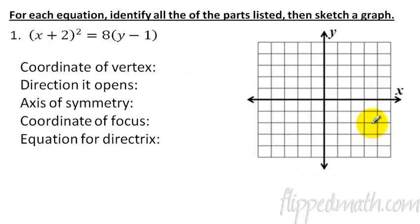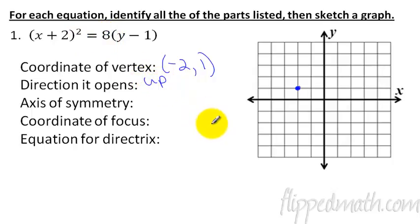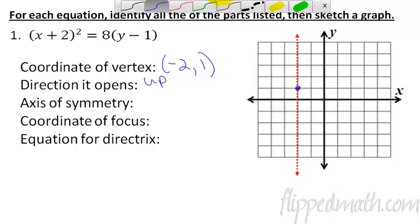Our first example, number 1. I've listed these things for you to do because if you will do this in that order, it will help you sketch an accurate graph. First thing is find the vertex - the vertex is just right there, that number with the x, the number with the y. Just make sure you're taking the opposites of these things. So negative 2, 1 - there is our vertex. Since x is being squared, it's a normal parabola, and since it's positive in front, it opens up. The axis of symmetry is x equals negative 2.